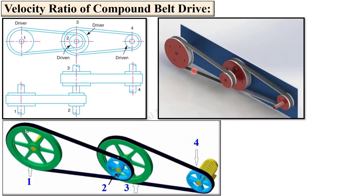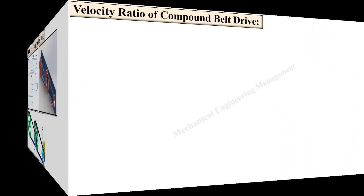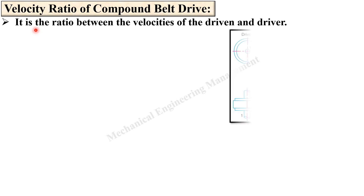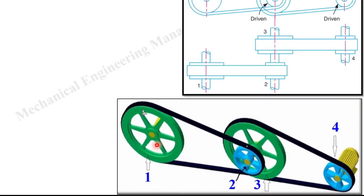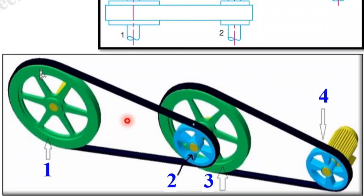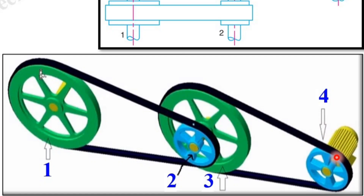Now, for the velocity ratio of a compound belt drive: as discussed earlier, on one shaft there are two pulleys, which is why it is called a compound belt drive. It is again the ratio between the velocity of the driven and the driver. Here, pulley 1 is driving pulley 2 — pulley 1 is the driver and pulley 2 is the driven. Since pulley 2 and pulley 3 are on the same shaft, pulley 1 also effectively drives pulley 3, which in turn drives pulley 4.